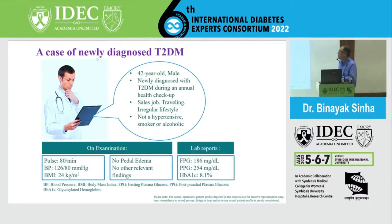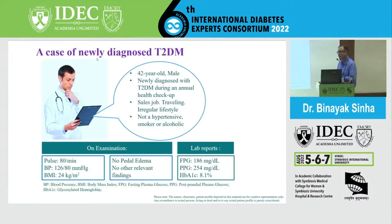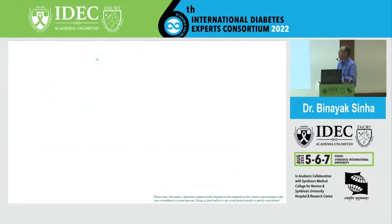His BMI is on the lower side at 24 kg/m². His lab reports show a fasting plasma glucose of 186, post-prandial of 254, with an HbA1c of 8.1%. Remember this 8.1%, because 7.5 to 8.5 is the commonest range of HbA1c at diagnosis that we see not only in India but across the world.